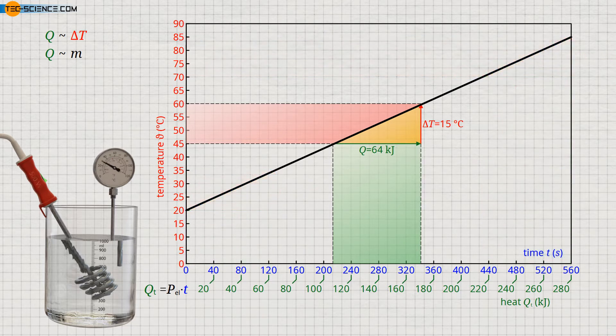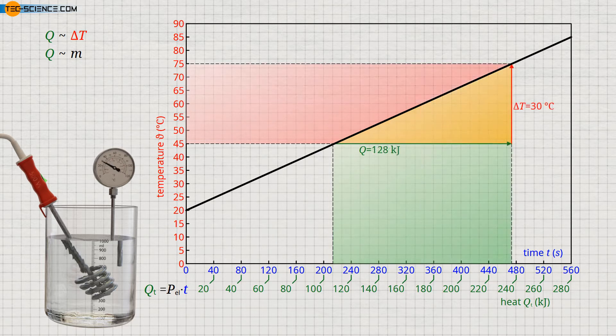The linear increase in temperature also shows that twice the change in temperature requires twice the amount of energy. For a temperature change of 15 degrees Celsius, a heat energy of 64 kilojoules must be supplied. If we want to change the temperature twice as much, which means by 30 degrees Celsius, twice the amount of heat of 128 kilojoules is now required. Correspondingly, three times the temperature change also requires three times the amount of heat. Heat and temperature change are, as already assumed at the beginning, actually proportional to each other.